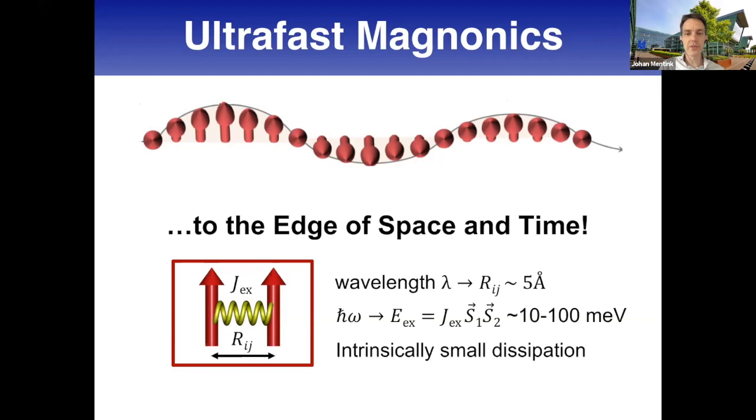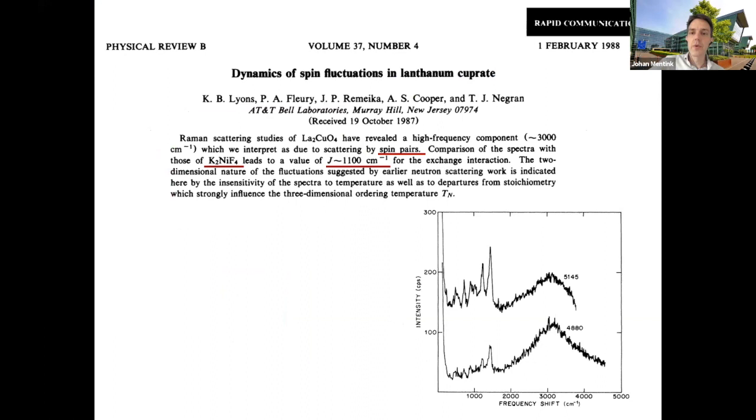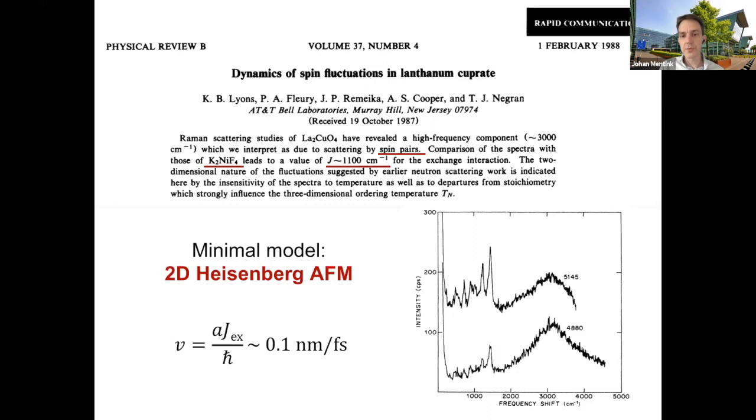What material has the record energy scales? The family of cuprates - layered antiferromagnets with very high energy scales. In potassium nickel fluoride you have extremely high exchange interactions, which means we need to look at the two-dimensional Heisenberg antiferromagnet. We can expect group velocities of almost one nanometer per femtosecond, similar to electrons, but electrons in metals are very diffusive in propagation.